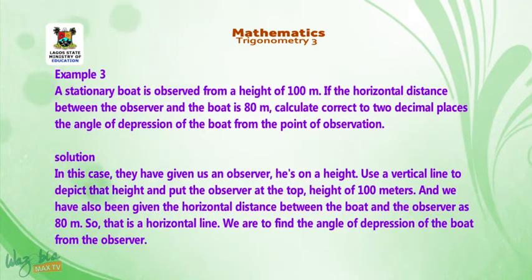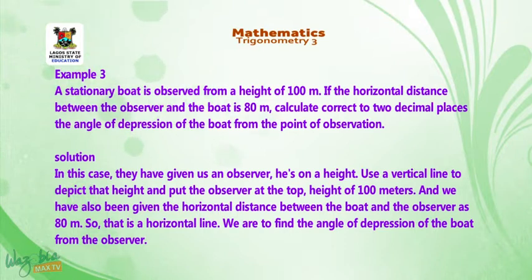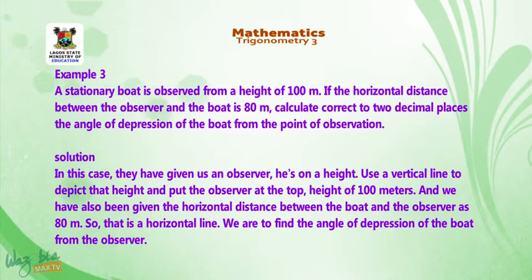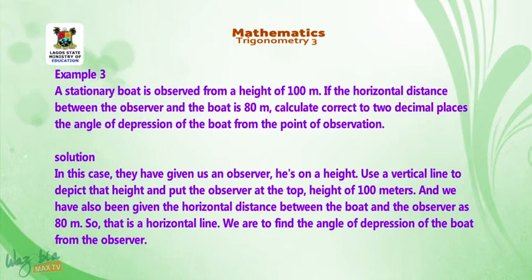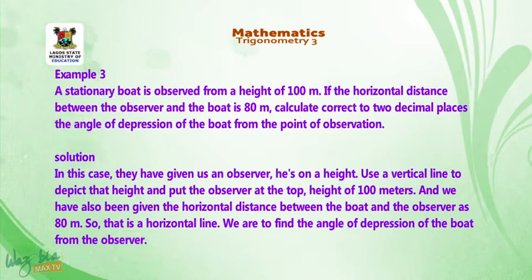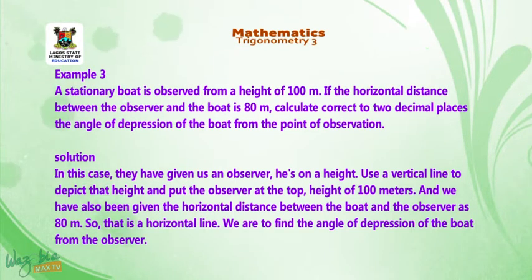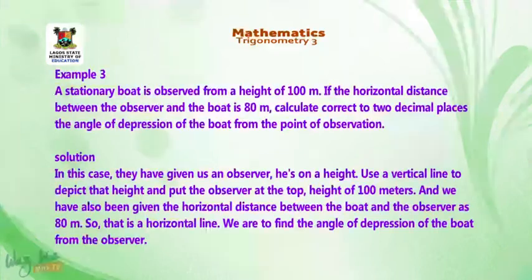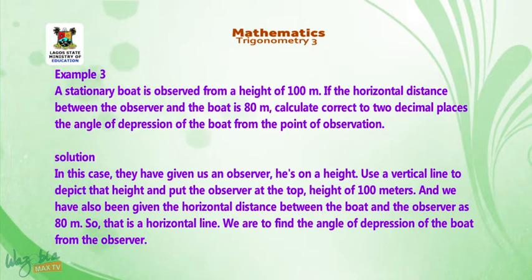Question 3: a stationary boat is observed from a height of 100 meters. If the horizontal distance between the observer and the boat is 80 meters, calculate correct to two decimal places the angle of depression of the boat from the point of observation. In this case, use a vertical line to depict the height and put the observer at the top — height of 100 meters. The horizontal distance between the boat and the observer is 80 meters, represented as a horizontal line.